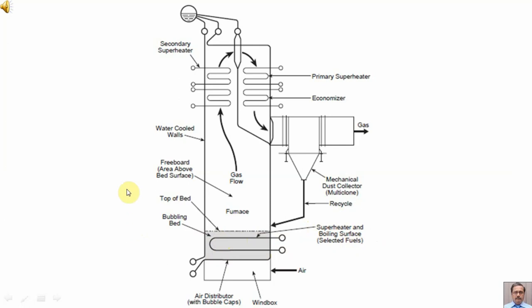Then after the top of the bed, we are having furnace. Furnace is surrounded by water cooled walls. In the furnace, we are having flue gas flow. The flue gas is passing through secondary superheater, then primary superheater, then economizer. After the economizer, we are having mechanical dust collector. And from the dust collector, the unburned fuel is recycled to the top of the bubbling bed.